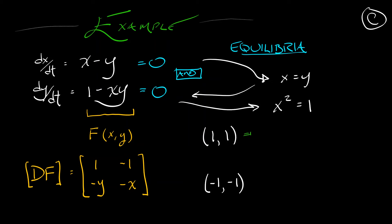At the point (1, 1), if I evaluate the derivative there, I get the matrix [1, -1; -1, -1]. The determinant of that is negative 1 minus 1, negative 2. Ah, negative determinant, that's a saddle.